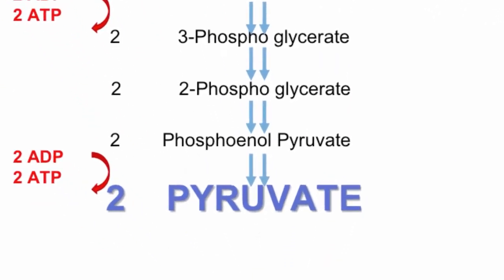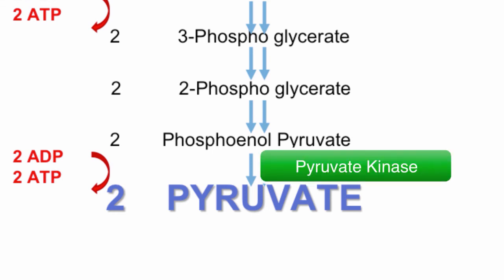The last important enzyme in this diagram is pyruvate kinase. This is somewhat obvious as to what it does because it is the last step on the path of creating pyruvate, but it is still quite important enough to mention.